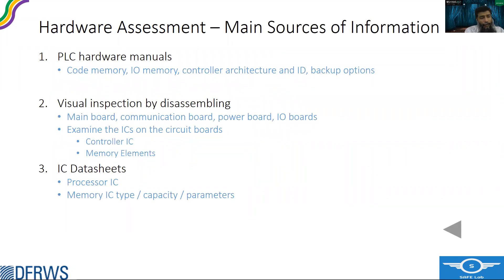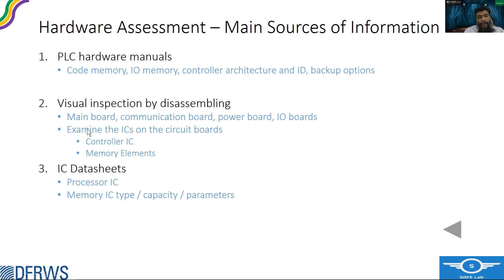The main sources of information for hardware assessment include PLC hardware manuals, which give hints about core memory, IOM memory, controller architecture, and available backup options. Next is visual inspection by disassembling the PLC to examine the boards — we are interested in the main board and the controller IC and memory element ICs. Once we find those ICs and their part numbers, we search the data sheets to find details about memory capacity, parameters, and type of memory.